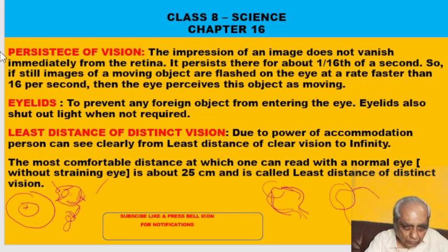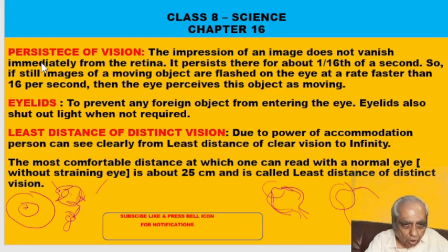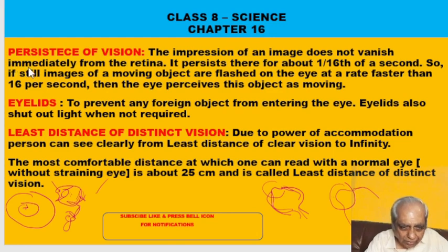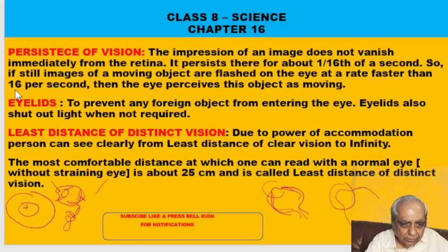Another important concept is persistence of vision. When observing an object, even if the object is removed, its image will remain on the retina for 1/16th of a second. This is called persistence of vision. If, before this impression fades, another image is brought in, both images will overlap and it will appear as if the object is moving. That is why in videos, images are projected at a speed faster than 16 images per second, making objects appear to move.